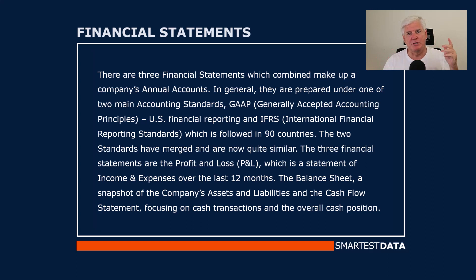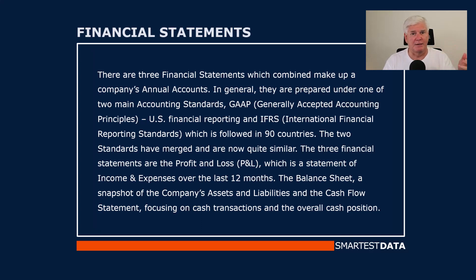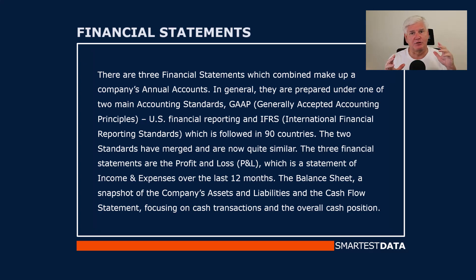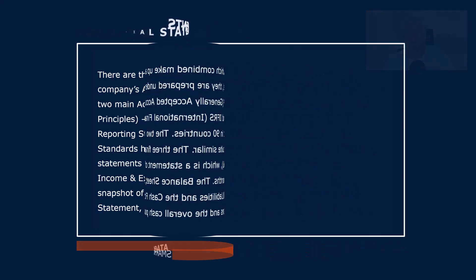The three financial statements are: the Profit and Loss (P&L), which is a statement of income and expenses over the past 12 months; the Balance Sheet, a snapshot of the company's assets and liabilities at a point in time; and the Cash Flow Statement, focusing on cash transactions and the overall cash position.